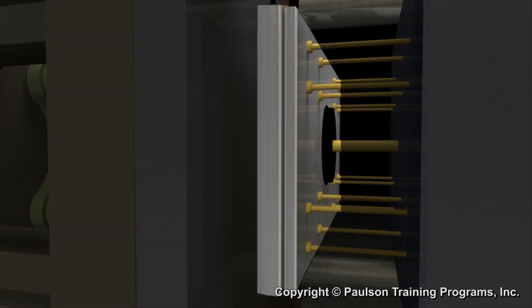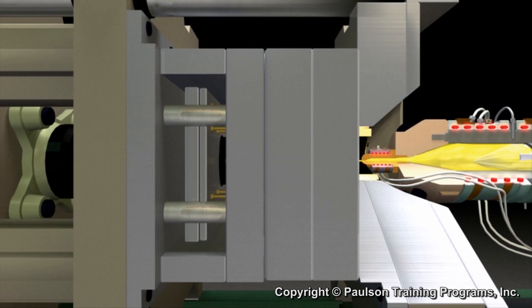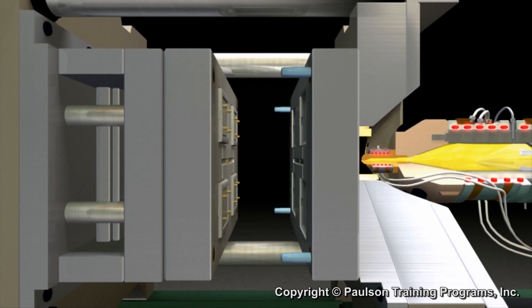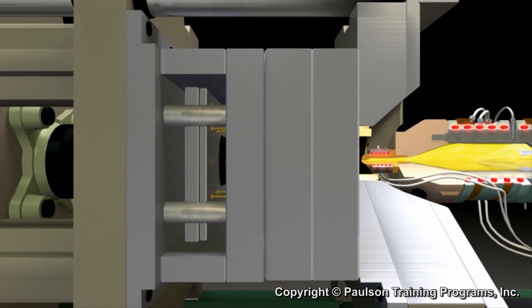The ejector plate and ejector retainer plate inside this housing hold the heads of the ejector pins and the sprue puller pin. The ejector plates are moved by a hydraulic or electric actuated ejector system.